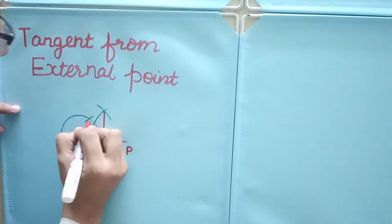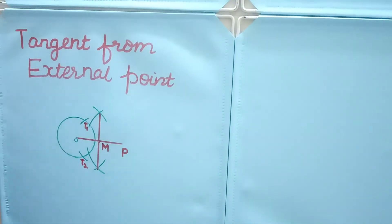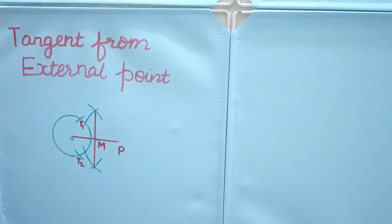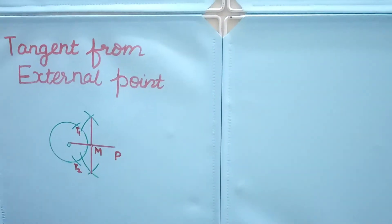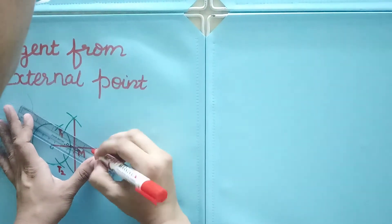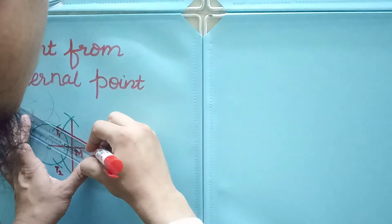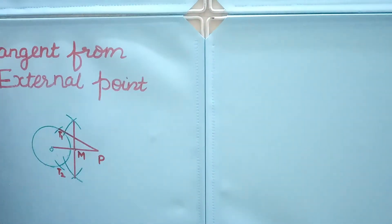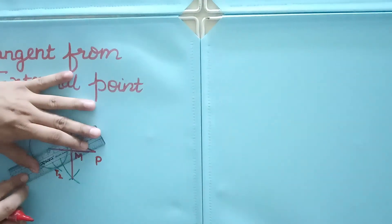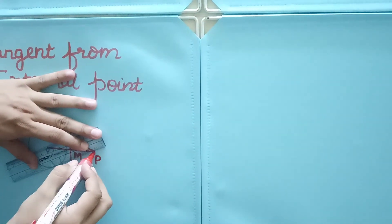Join them with point P and you will get the tangents to the circle. We will join them to point P. Like this, this is the first tangent and this is another tangent.